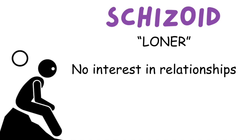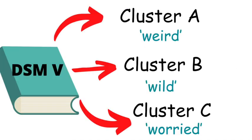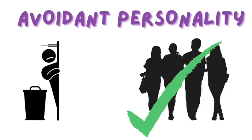Schizotypal personality disorder can be confused with avoidant personality disorder because they both tend to be alone, but they are alone for very different reasons. Hopefully, these visuals will help you. Avoidant personality disorder belongs to Cluster C, also called the worried cluster. Patients with avoidant personality disorder want social relationships, but they are worried about embarrassing themselves, worried it won't work out, worried people won't like them — they just worry a lot about social interactions. However, they very much desire having these relationships.